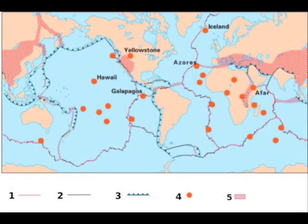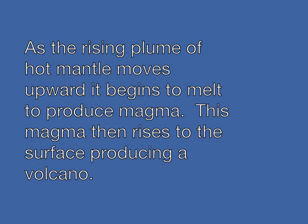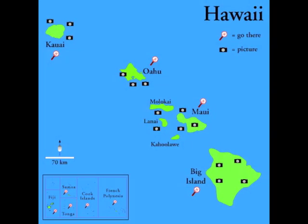There are also hot spots. Volcanoes can occur in areas that are not near plate boundaries — they're in the interior of plates. These are called hot spots. Hot spots result from plumes of hot mantle surging towards the surface, and they tend to be fixed in position with the plates moving over the top. As the rising plume of hot mantle moves upward, it begins to melt and produce magma, which then rises to the surface, producing a volcano. An example of a hot spot would be the state of Hawaii.